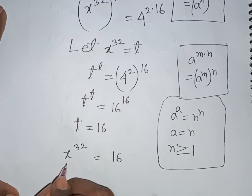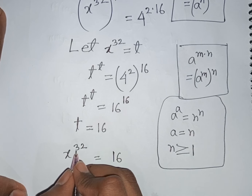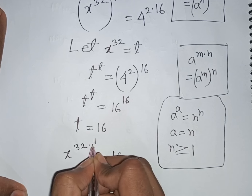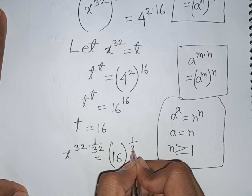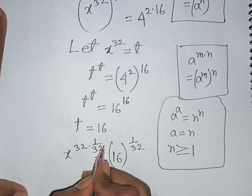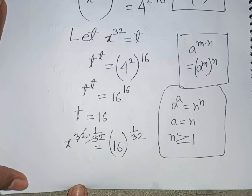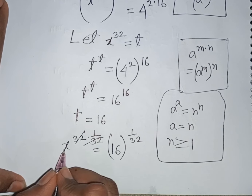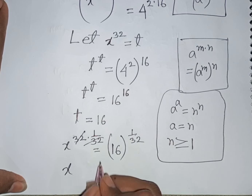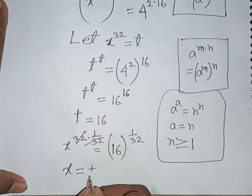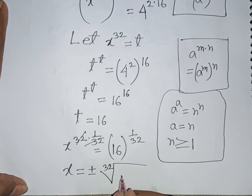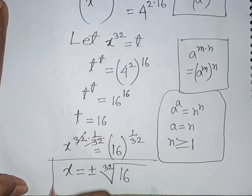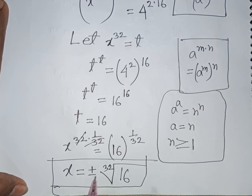We need the value of x, so raise both sides to the power of 1 over 32. The 32 exponents cancel, giving x equals plus or minus the 32nd root of 16. This is the value of x and our final answer.